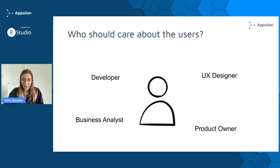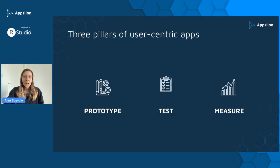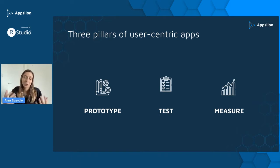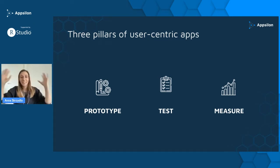Basically, what I want to say is that each and every person in the team should care about the users — it's not the job of a specific role. So even if you don't have a UX designer in your team, that's perfectly fine and you can still build user-centric applications. The three pillars I want to talk about today are: prototype, test, and measure. I will go through them one by one, explaining how to do that and why it's important.